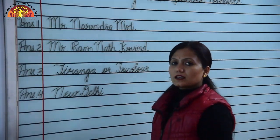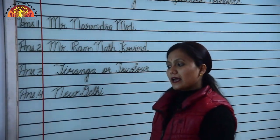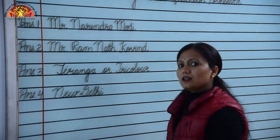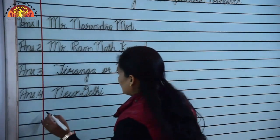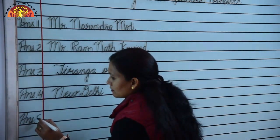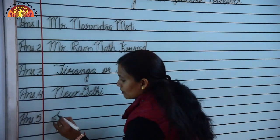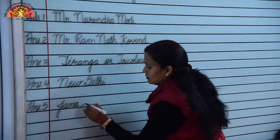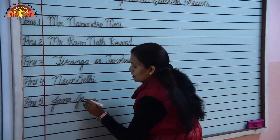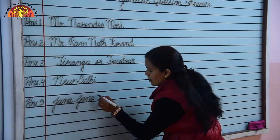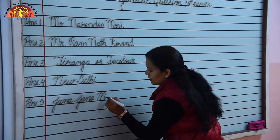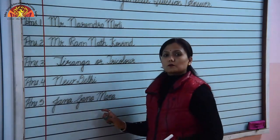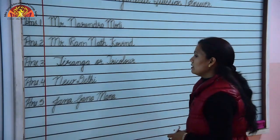Question 5: What is our national anthem? Jana Gana Man is our national anthem. Spelling: J-A-N-A G-A-N-A M-A-N-A. Jana Gana Man is our national anthem.